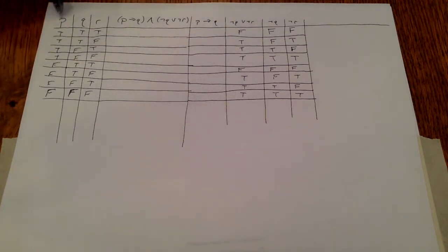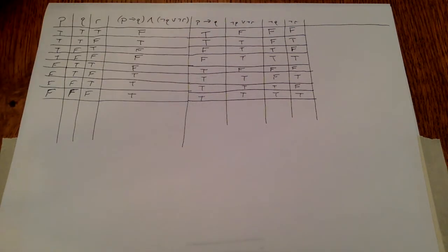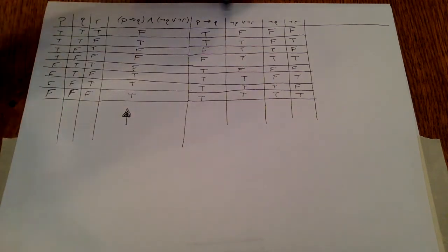Now for the P implies Q, we just need to look at the P and Q columns and combine them with the implication operation. There we are, we have the implication operation completed, and now to finish this column, I just need to take these two columns and take the and operation. And there we have it, our column is now complete, and we can verify it by checking all of our work along these columns.